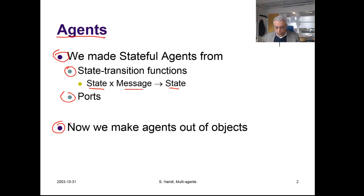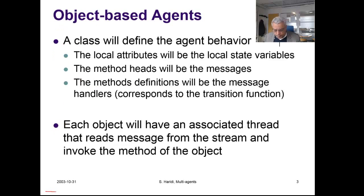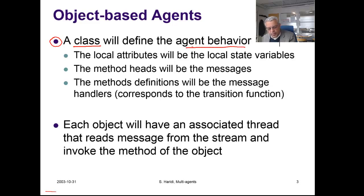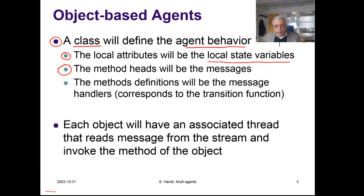Now let us make agents out of objects. In this unit we are going to define object-based agents. A class will define the agent behavior. The local attributes of an object will be the local state variables of an agent. A method head will be the corresponding message sent to the agent, and method definitions will be the message handlers — the code executed when a message is received, corresponding to state transition functions.